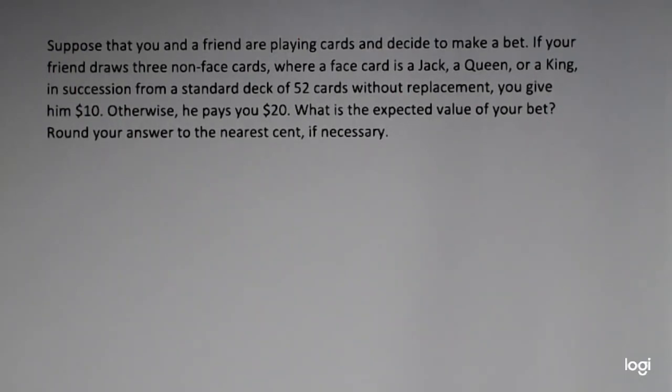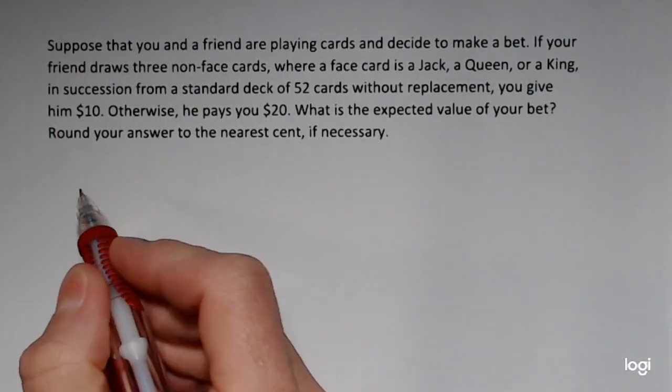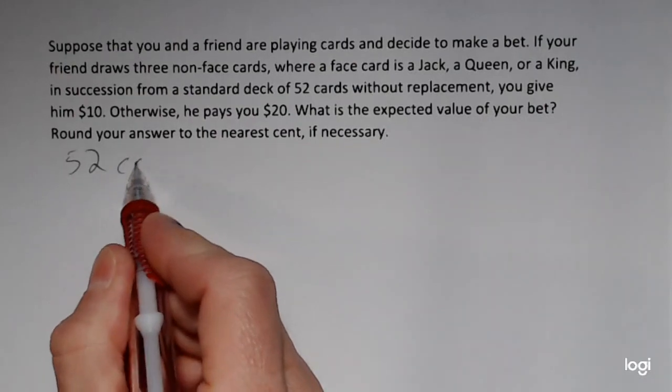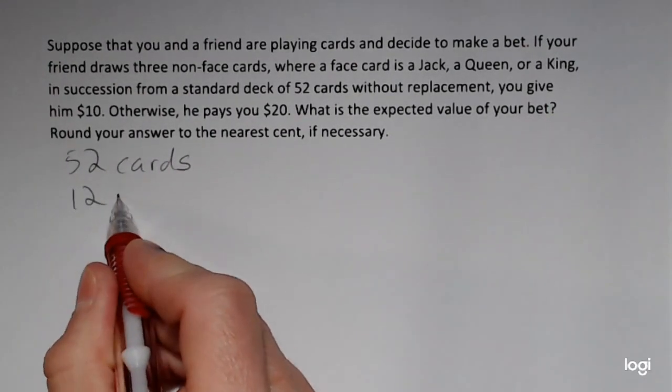The expected value formula is the sum of all of the x values times their corresponding probabilities. So for a problem like this, it's helpful to set up a probability table. Let me summarize what's given. We have 52 cards in a deck of cards.